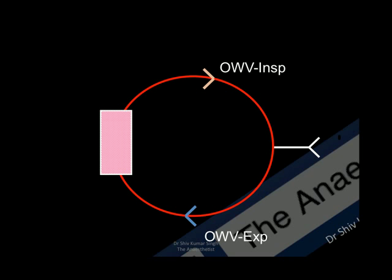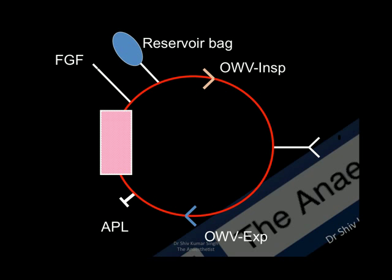The ideal position for the APL valve is on the expiratory side because the expired gases need to be vented out. Once the gases flow through the soda lime, the carbon dioxide is absorbed and the volatile anaesthetic agents are recycled. You get warm humidified gases which are collected in the reservoir bag. Fresh gas flow needs to be added to the inspiratory limb, which will flow to the patient. The reservoir bag needs to be in the inspiratory limb because it provides the peak inspiratory flow. This is the ideal configuration of a circle system.